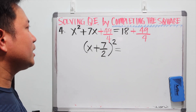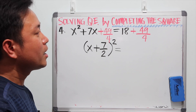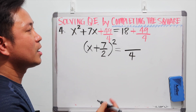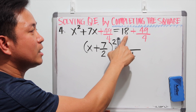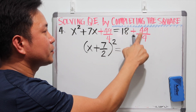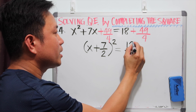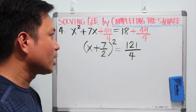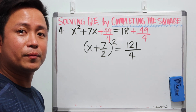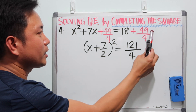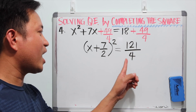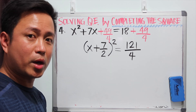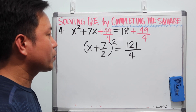The right side is 18 plus 49 over 4. The LCD is 4, and 4 times 18 is 72. So 72 plus 49 gives us 121, meaning 18 plus 49 over 4 equals 121 over 4. A tip: when simplifying the right side, keep it as an improper fraction so you can easily take the square root of the numerator and denominator separately.